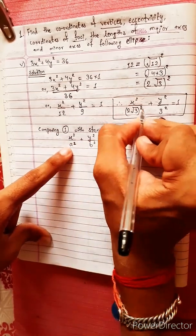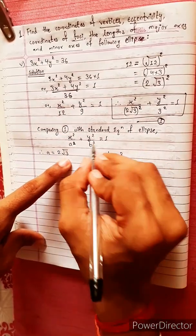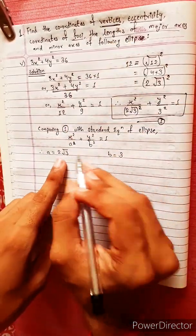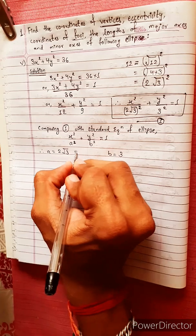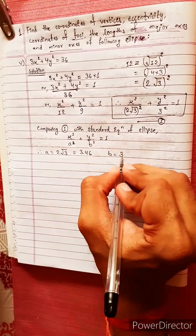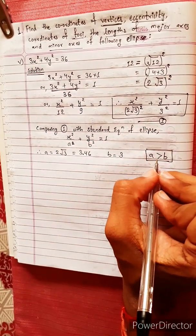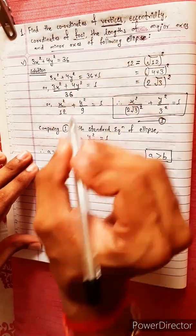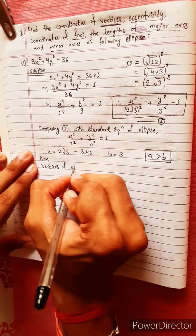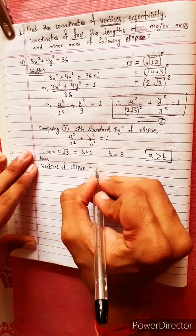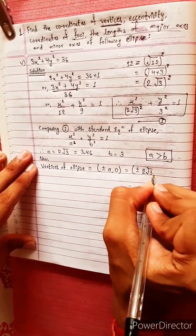Comparing, a² equals (2√3)² so a equals 2√3, and b² equals 3² so b equals 3. Since a is greater than b, the major axis lies along the x-axis. The vertices of the ellipse are given by (±a, 0), which equals (±2√3, 0).